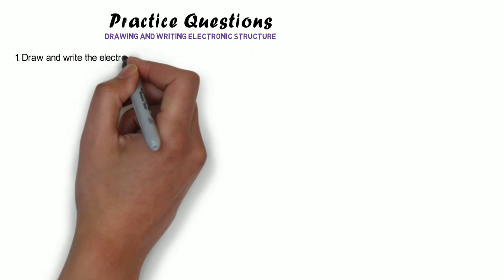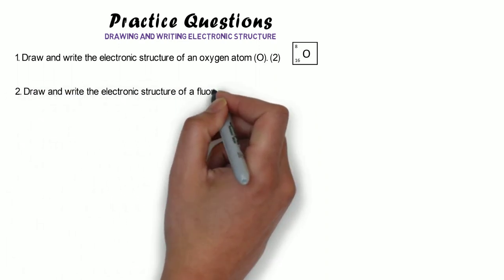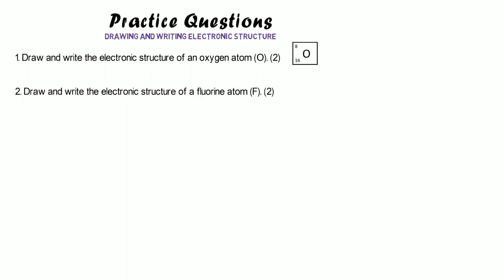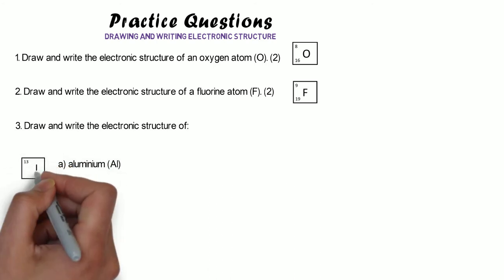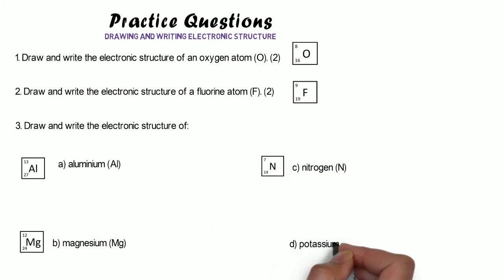Here are some practice questions to have a go at. For each one, draw the electronic structure of the atom and then write it as well. Draw and write the electronic structure of an oxygen atom — here's the symbol for oxygen. The second is a fluorine atom — here is its symbol. Then we have aluminium, magnesium, nitrogen, and potassium. Remember that the small number tells you how many electrons there are. Pause the video and have a go.